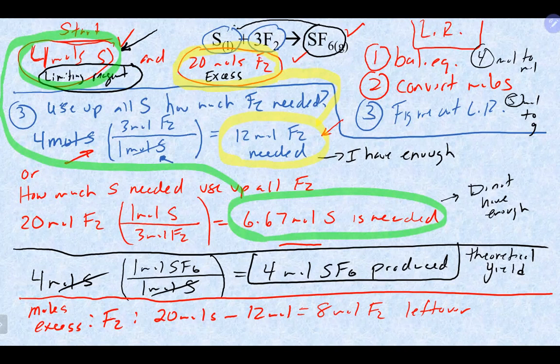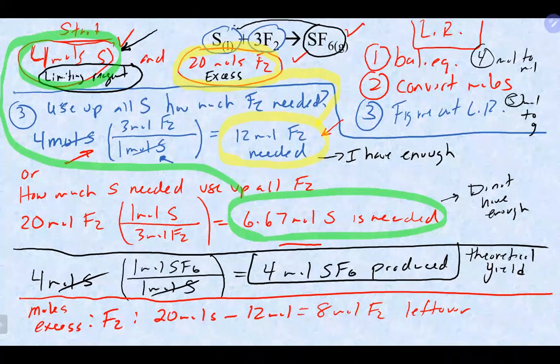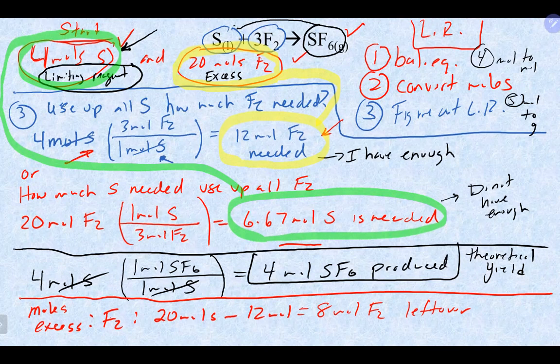So one approach is doing the same steps as before with one additional calculation in the middle to find the limiting reagent. Another very common approach is to do two separate stoichiometry problems — one for each reactant to make the product — and whichever produces the least amount of product is your limiting reagent and your theoretical yield. There are many ways to solve these problems.